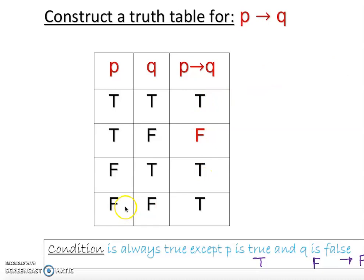If false then false, which is true. So that's how it works. Remember, only one pattern—true first, false later—is going to give you false. If true then false, that's how we do conditionals. That's how we construct conditional statements.